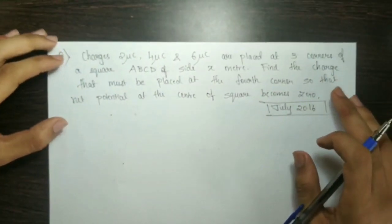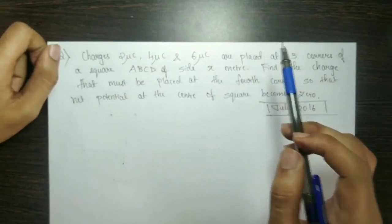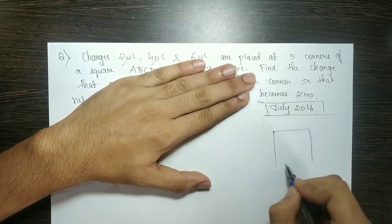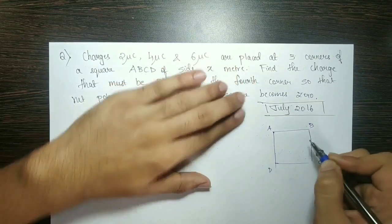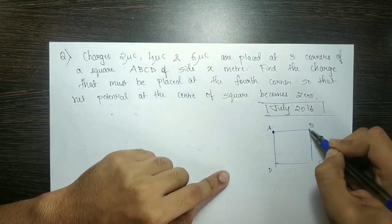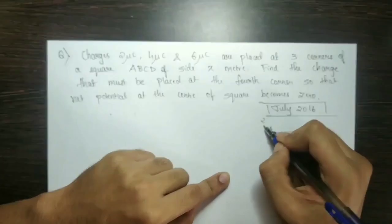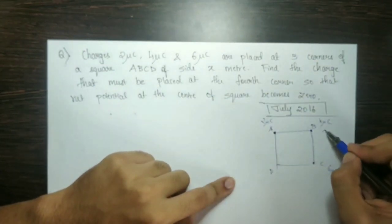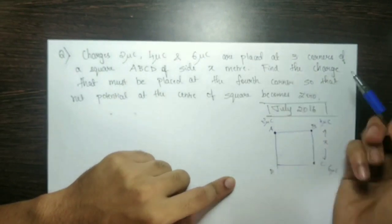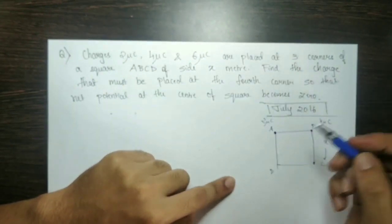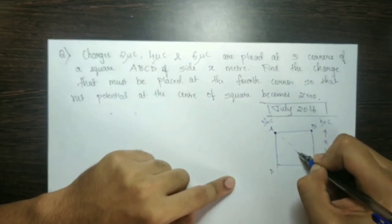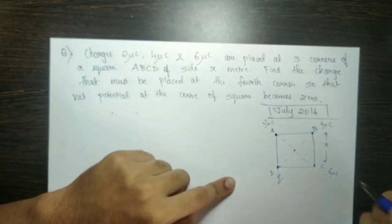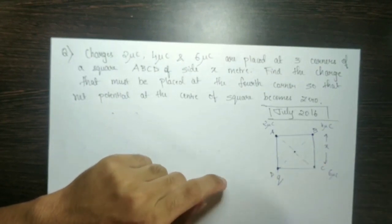The next problem: charges of 2 microcoulombs, 4 microcoulombs, and 6 microcoulombs are placed at three corners of a square. We draw the square with corners A, B, C, D. At corners A, B, and C we place 2 microcoulombs, 4 microcoulombs, and 6 microcoulombs respectively. The side of the square is x. We need to find the charge q that must be placed at the fourth corner D so that the net electric potential at the center becomes zero.